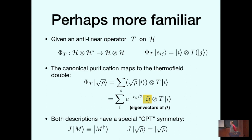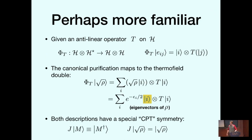A more familiar discussion of this purification involves the introduction of an anti-linear operator T. Given this anti-linear operator T on H, I can define an isomorphism between this Hilbert space and two copies of the original Hilbert space. Then if I map this canonical purification over there, you get the thermofield double state. I'm going to use the square root rho description essentially because I don't have to introduce this extra anti-linear operator T. I want to make it clear that everything I'm talking about is canonical.